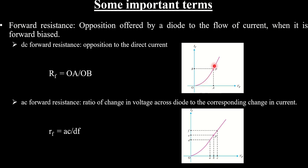DC forward resistance is the opposition to direct current. Referring to the forward characteristics curve, if P is the operating point, the DC forward resistance Rf equals OA divided by OB. AC forward resistance is the ratio of the change in voltage across the diode to the corresponding change in current — that is, the ratio AC to DF around the operating point.